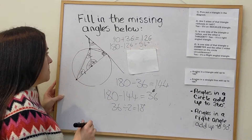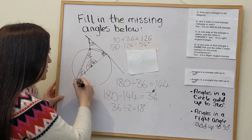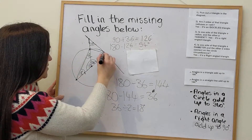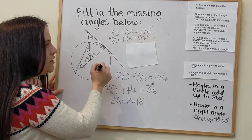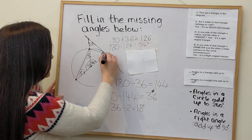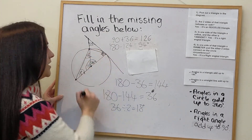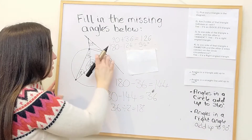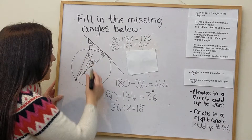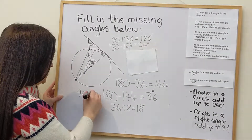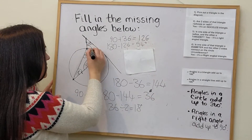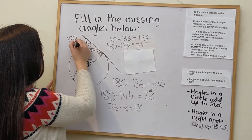Looking at another triangle — from here to here to here — one side is a diameter and the other two sides meet on the circumference, so it's a right angle triangle. This angle here is the right angle. To find the adjacent angle: 90 minus 18 gives 72 degrees. Then, since angles in a straight line add up to 180: 180 minus 72 is 108 degrees.